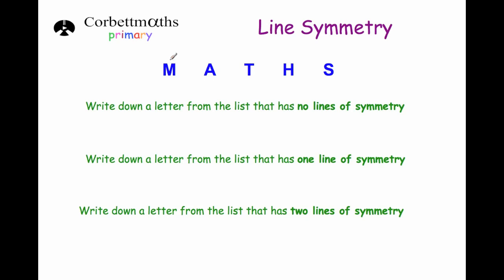The letter M has got one line of symmetry, a vertical one — the left hand side folds across on top of the right hand side. The letter A has got one line of symmetry also, a vertical line. The letter T has got one line of symmetry as well. The letter H has got two lines of symmetry — one vertically down through it and also a horizontal line of symmetry. The letter S doesn't have a line of symmetry; no matter where you try to draw that line, it won't fold over on top of itself. So the first question asks for a letter with no lines of symmetry — that's the letter S.